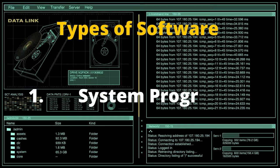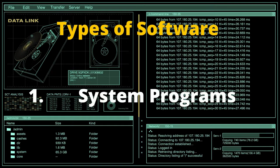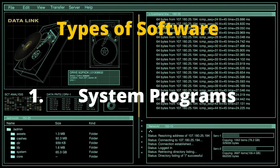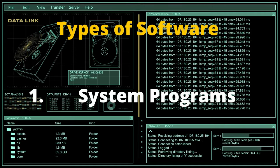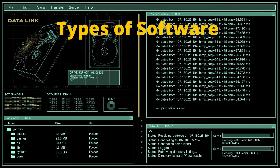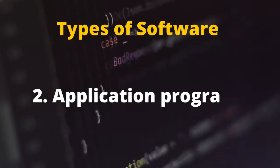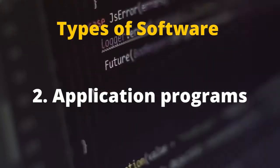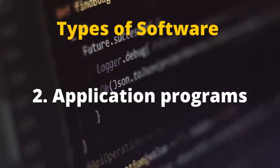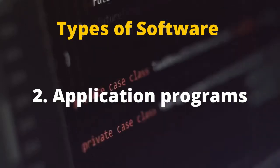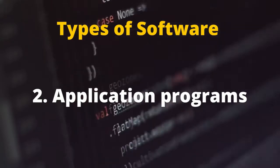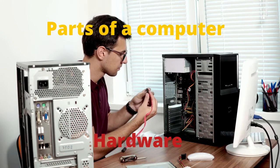We have two types of software. First, system programs — these are programs written mainly for the computer by computer manufacturers and programmers. These programs control the computer; for example, the recycle bin, network settings, and My Computer. We also have application programs — these are programs written by programmers, like a snake game or an e-learning platform, which fall under this category.